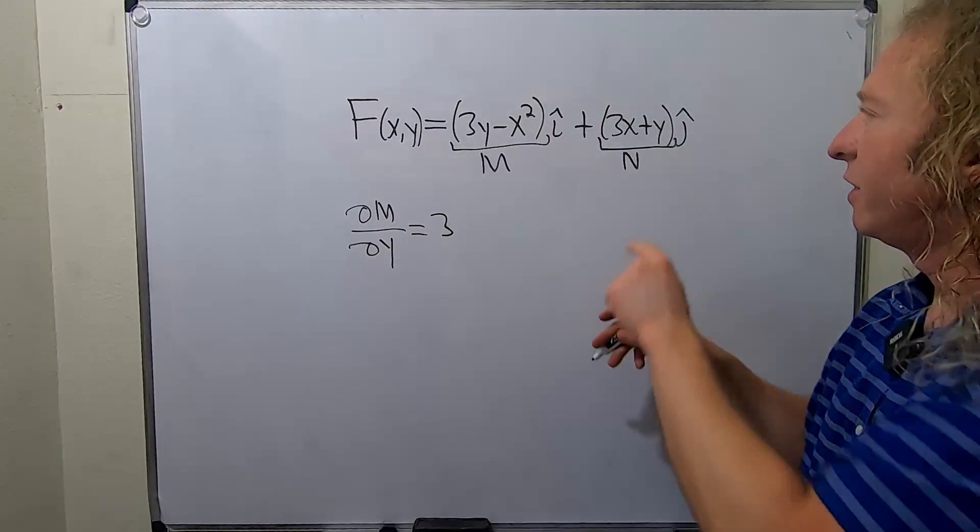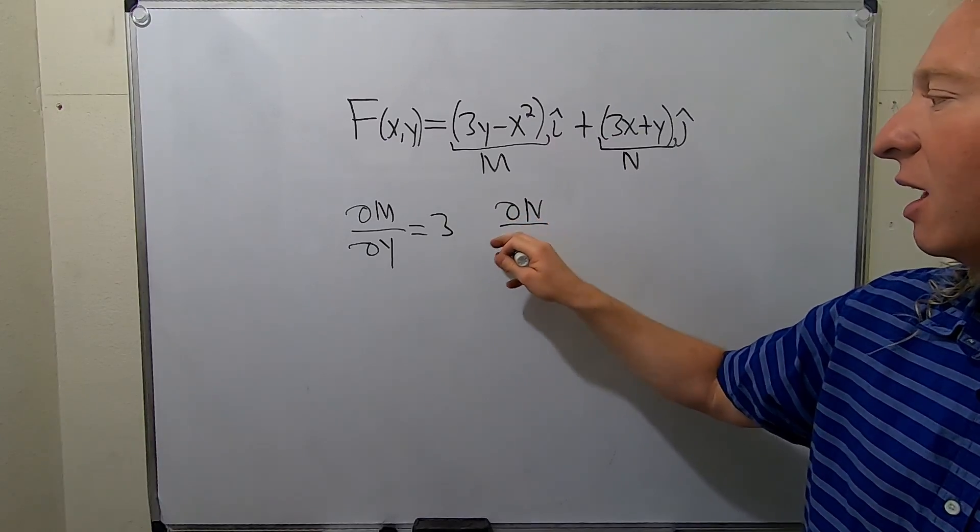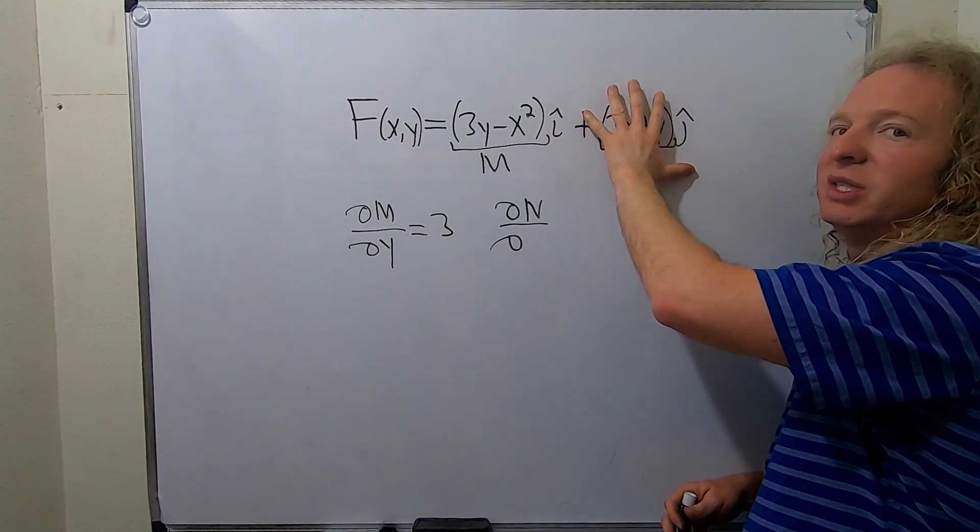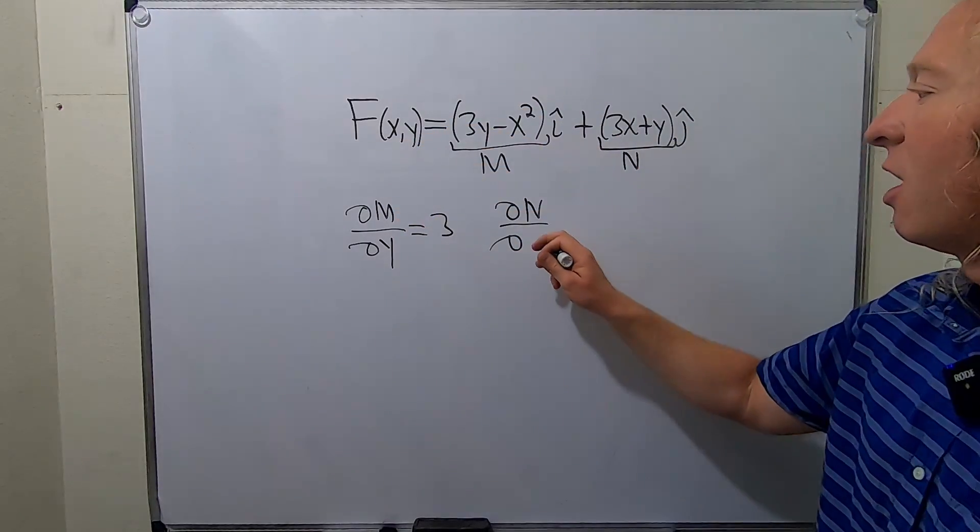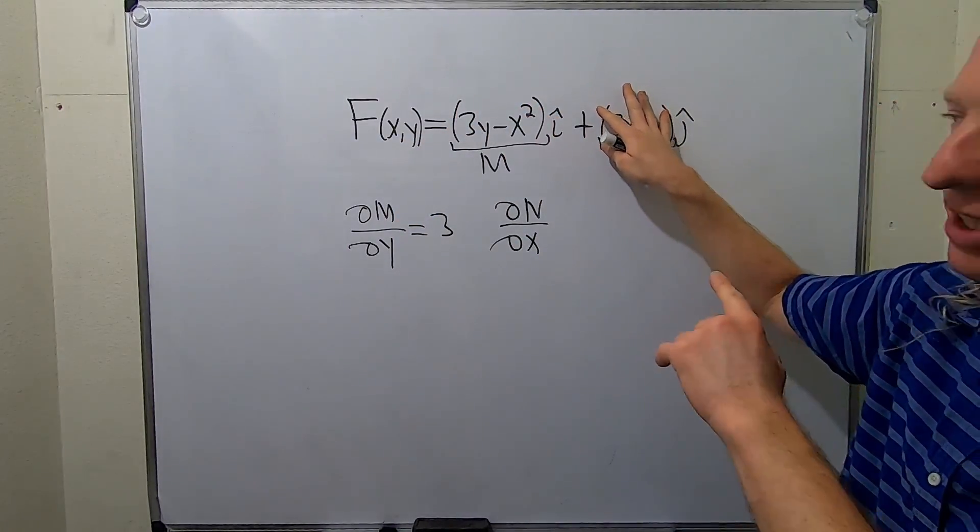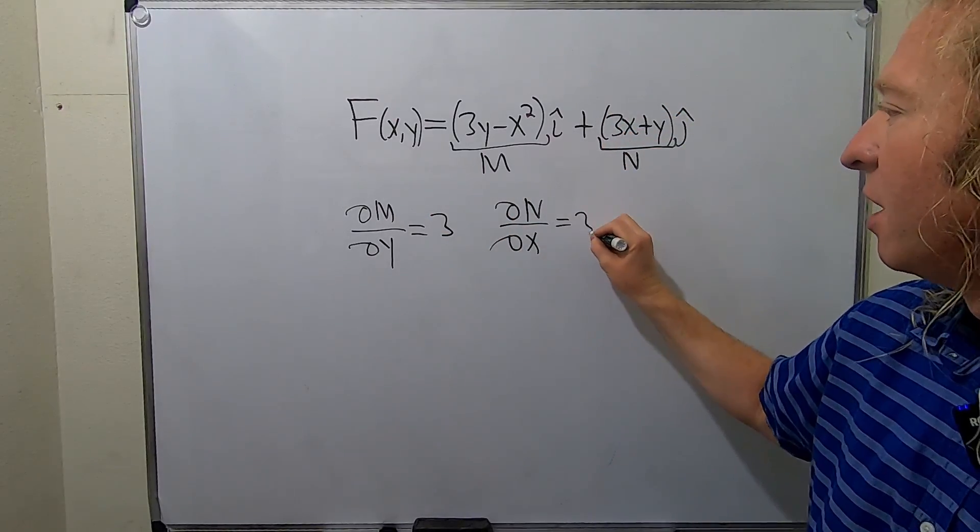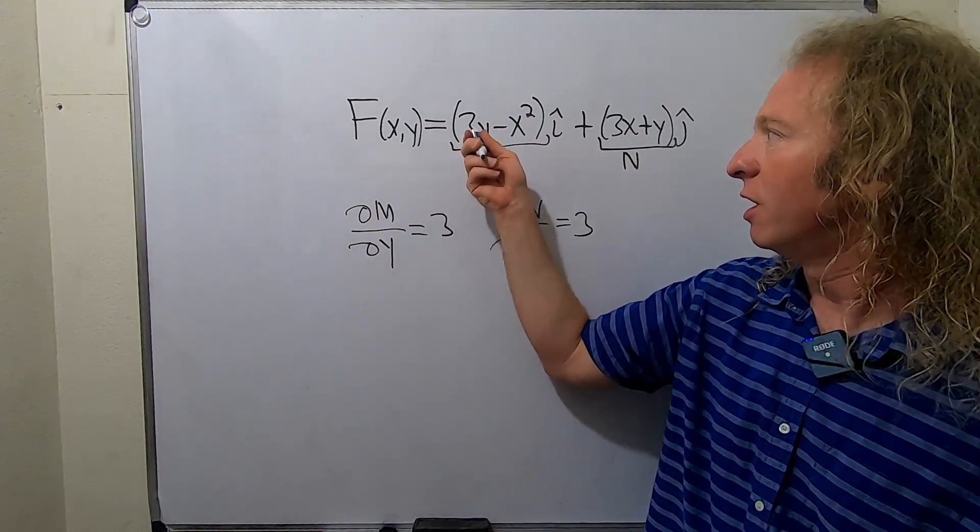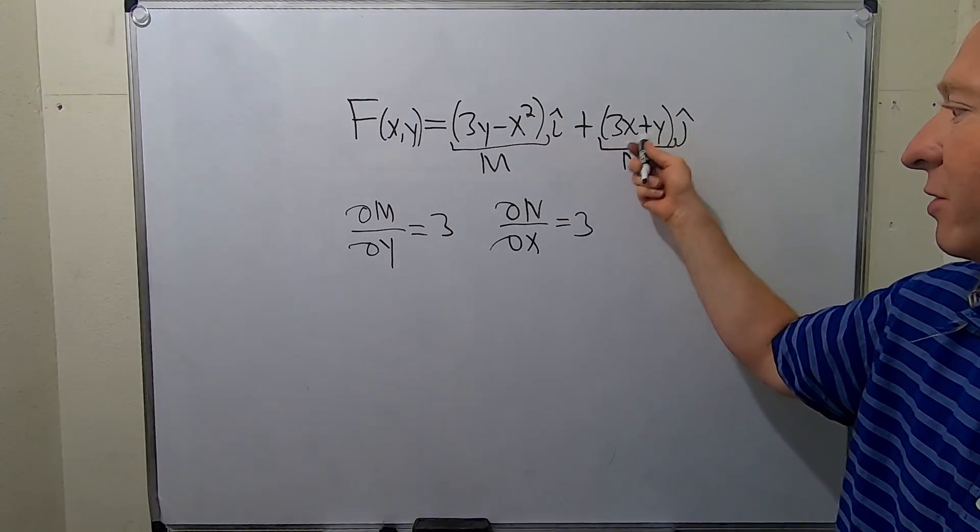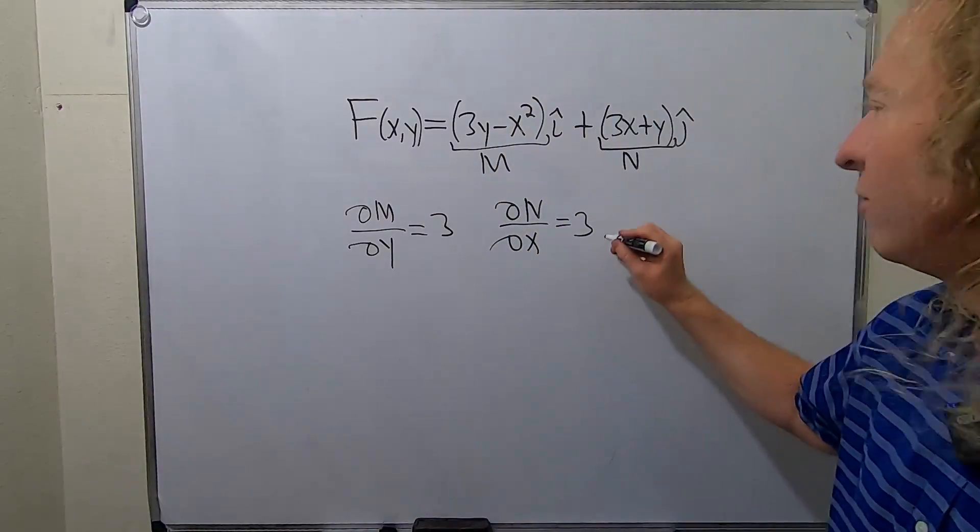So this will just be three. Then you look at this one and you do ∂N/∂... This is the Y component or the second one, so you do ∂N/∂X. It's always opposite. For this one you do ∂M/∂Y, for this one you do ∂N/∂X, so it's backwards. The derivative of 3X is 3. This is a partial derivative so the derivative here is 3, here is 0, here is 3, here is 0 with respect to X. These are the same so it is a conservative vector field.